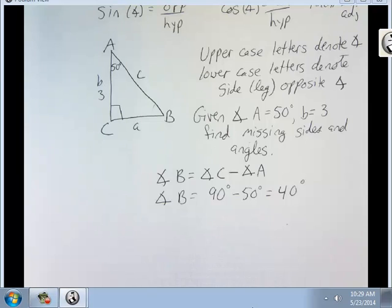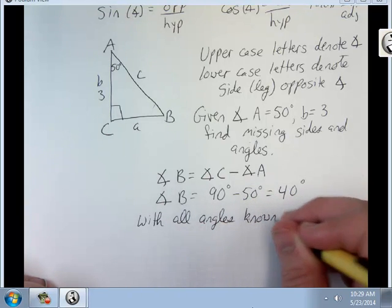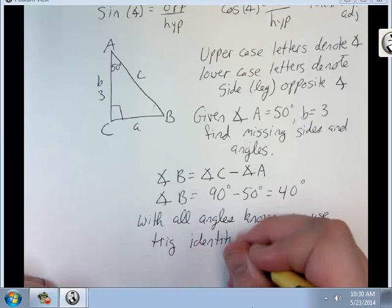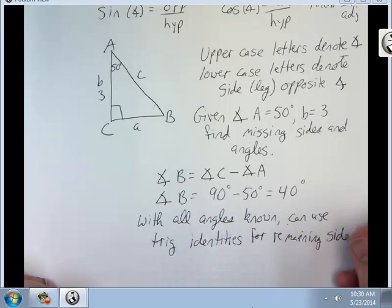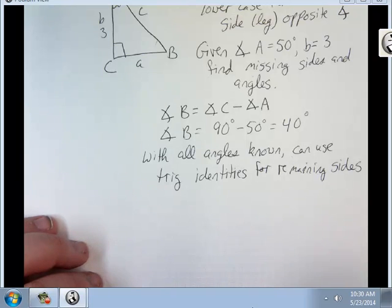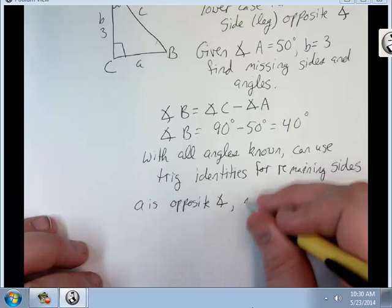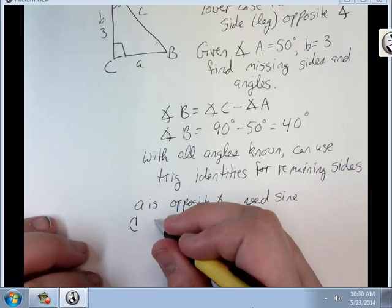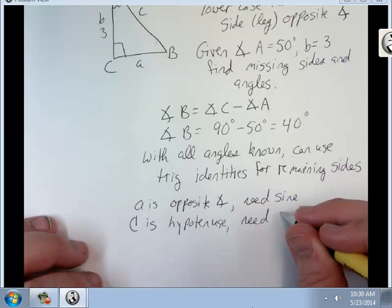Now that I have all the angles, I can just use the trig identities to find the remaining sides. A is opposite angle A, needs sine, C is hypotenuse, I need tangent.